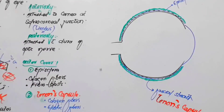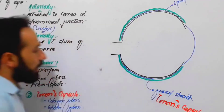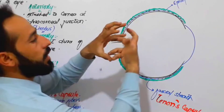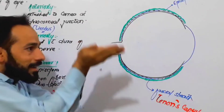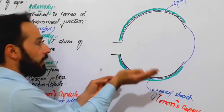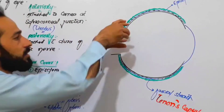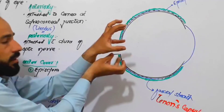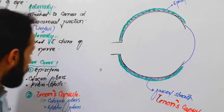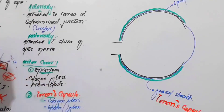The Tenon's capsule is like a socket in which the eye is moving — it is a cover around the eye. There is also attachment of the extraocular muscles to the sclera, which we will discuss later. So the outer covers of the sclera are the episclera and the Tenon's capsule.